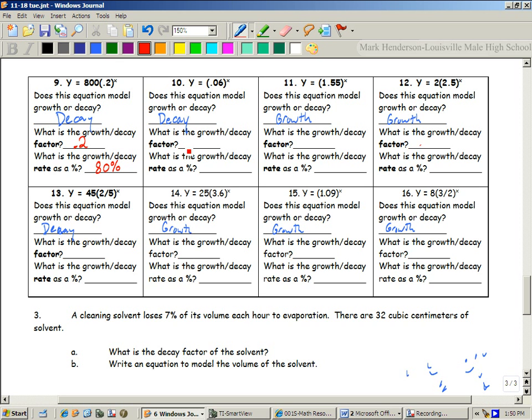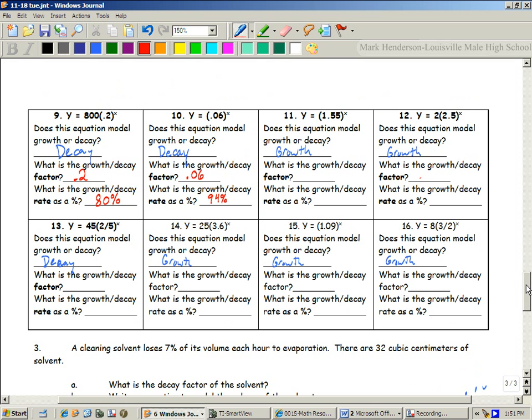So here the decay factor is 0.06, right? But the decay rate as a percent is 94%. Okay? So here's how it is. It's basically the distance away from 100% that you are. Does that make sense?